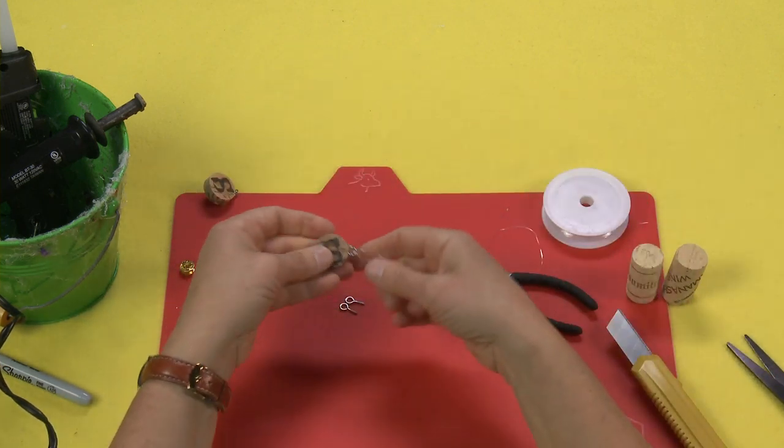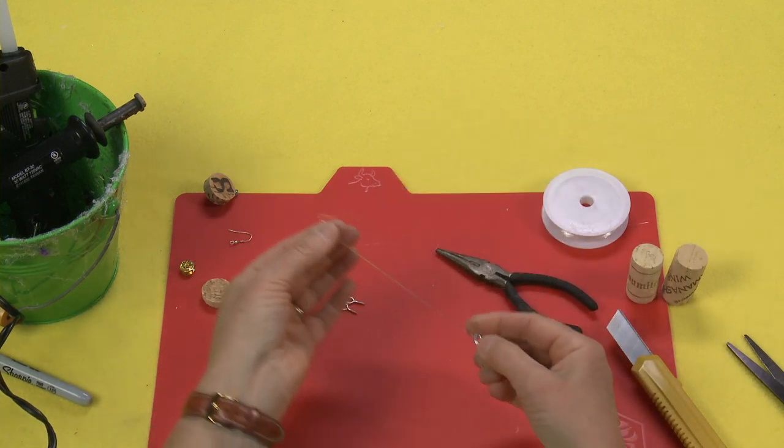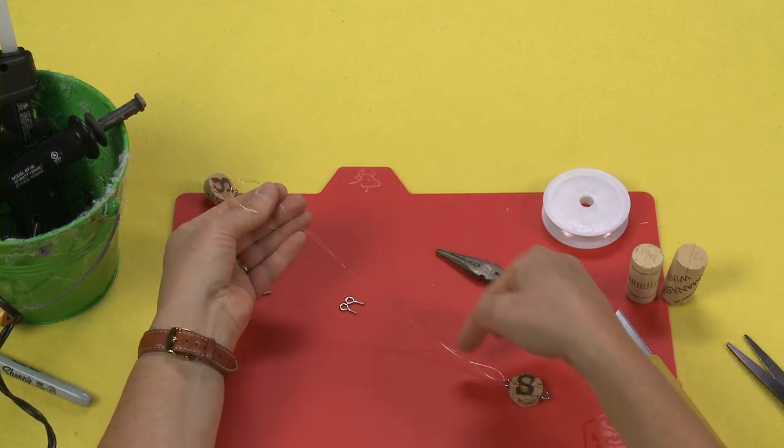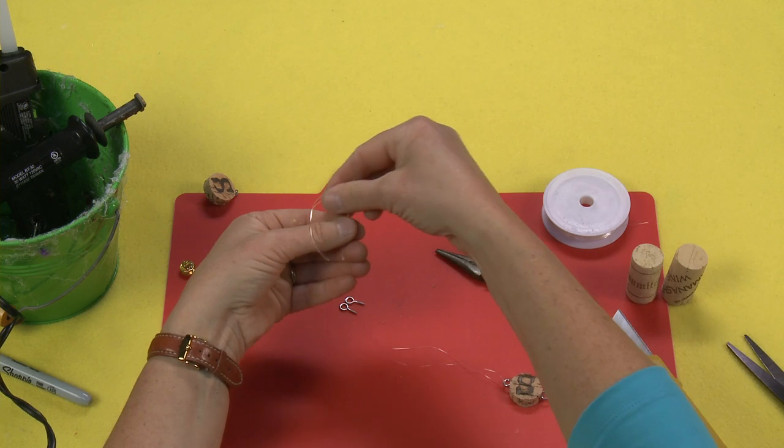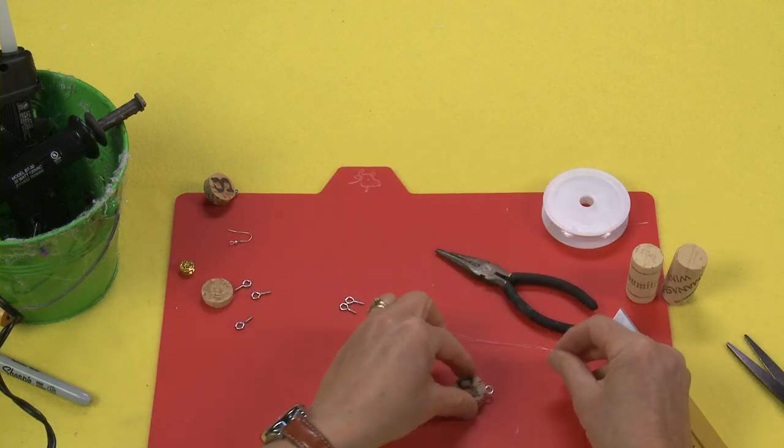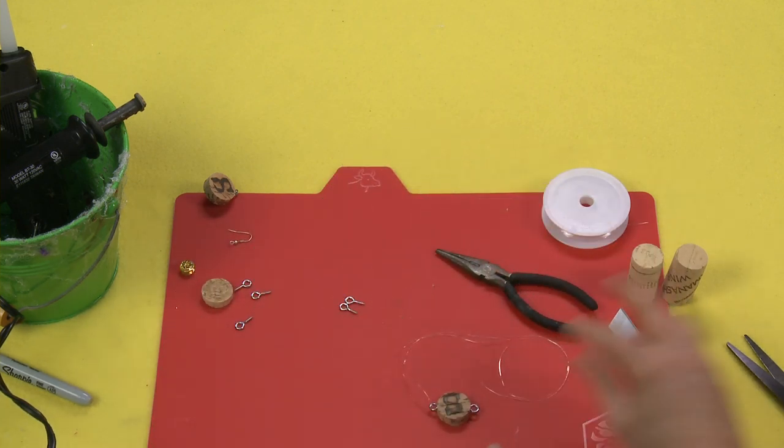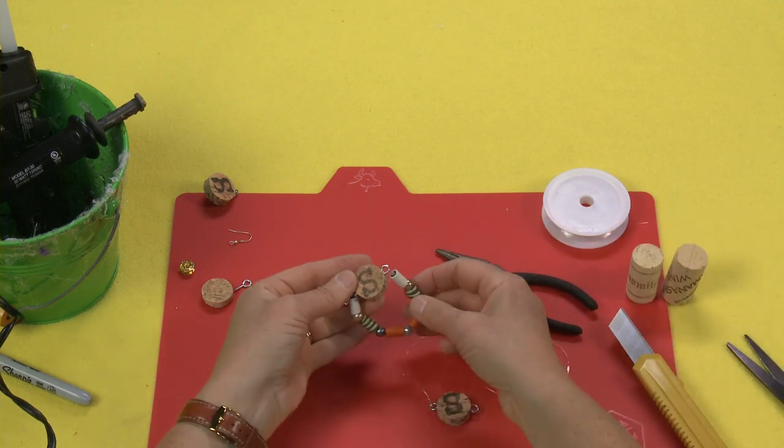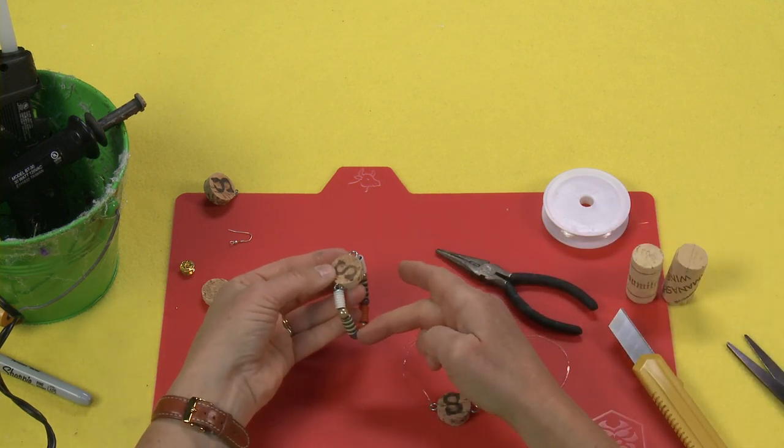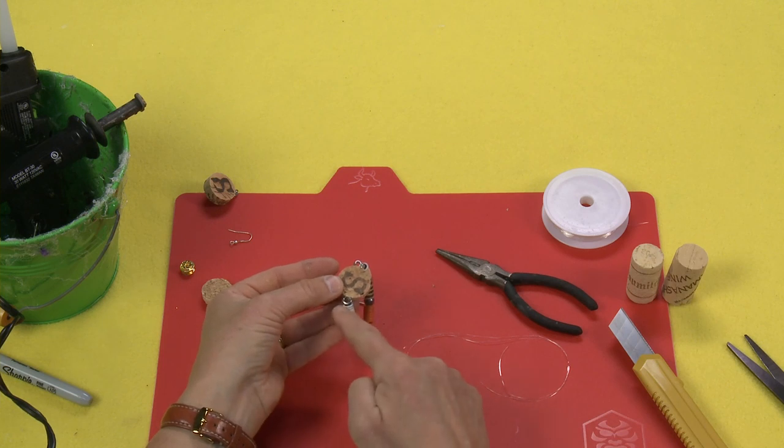And then string your beads on both strings, pull them around, and then tie off on the other side, just like this. So it's strung through here, strung the beads on both strings, and then just tie it off on the other edge so that you make your bracelet.